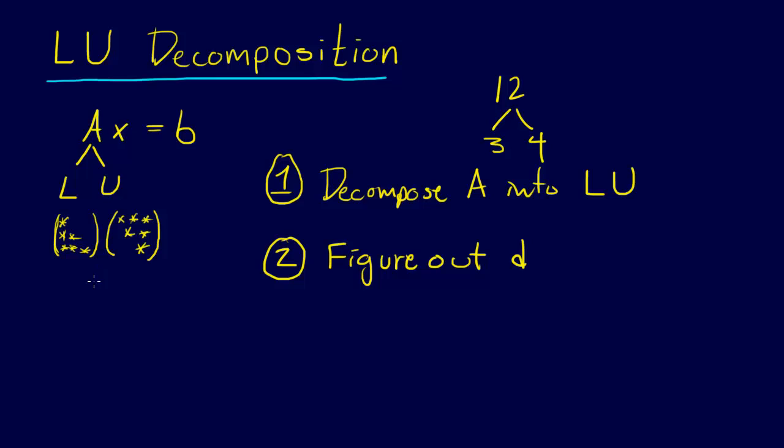We go from this matrix AX equals B, and if we want to rewrite this, we could say AX minus B equals zero. Then we factor an L out of A, but we can also factor an L out of B.